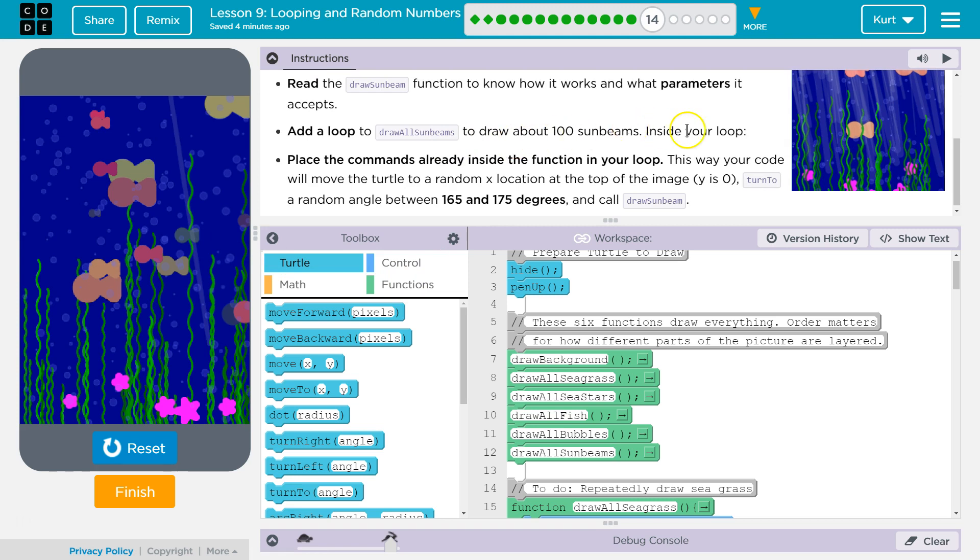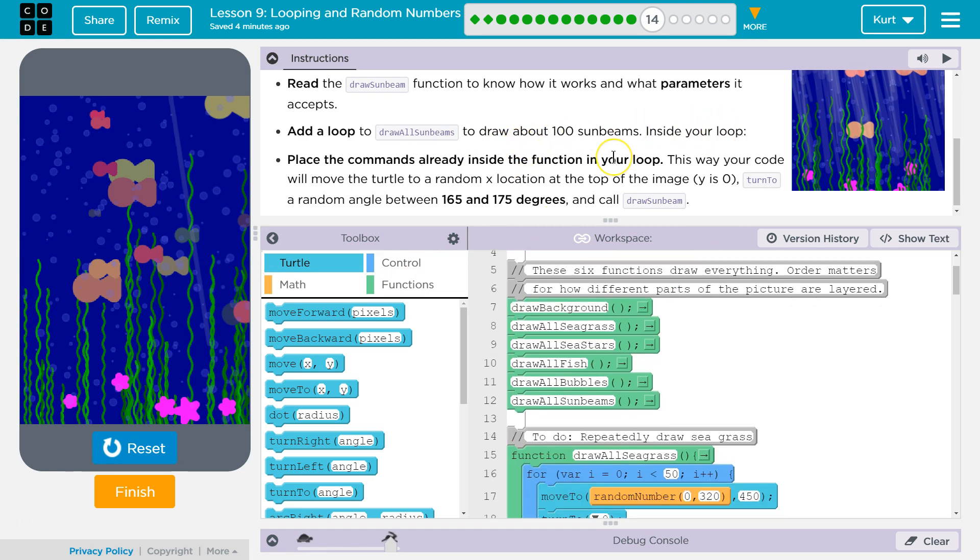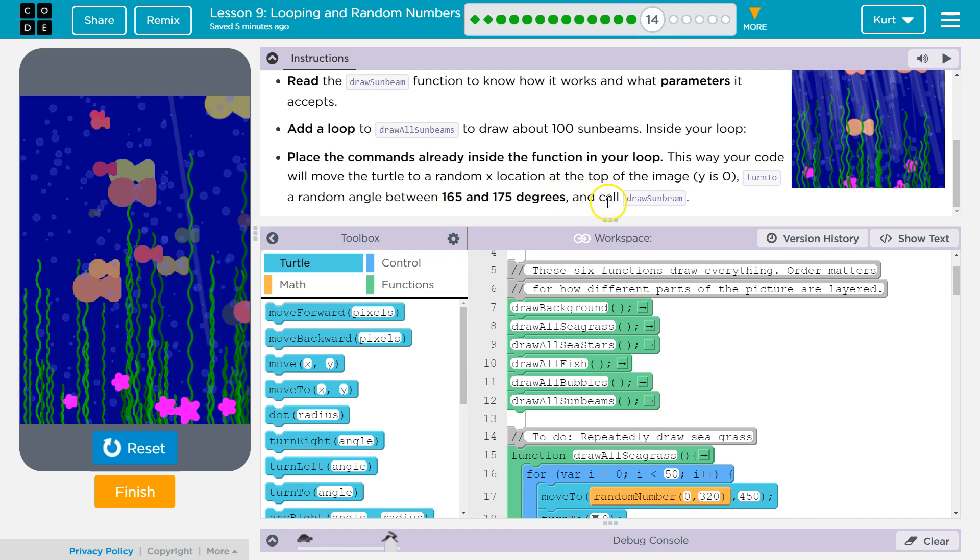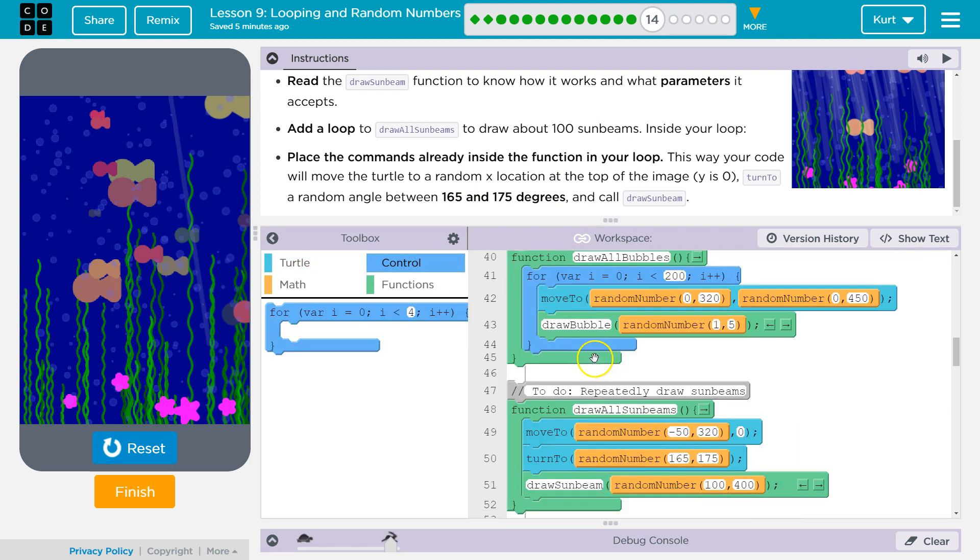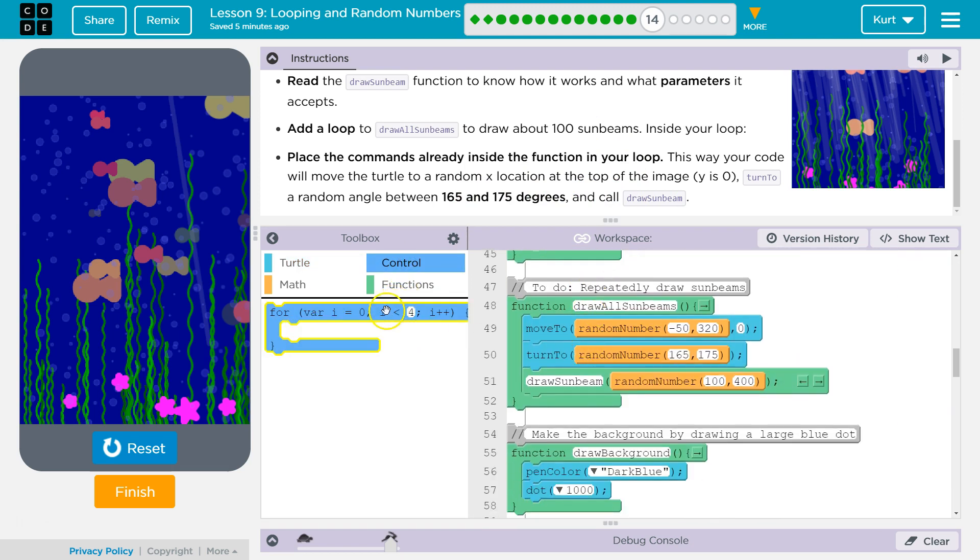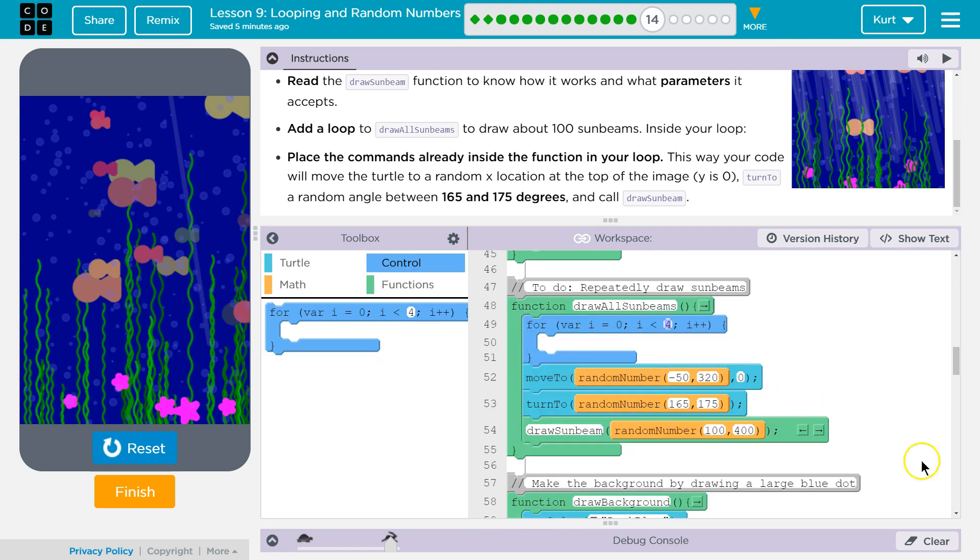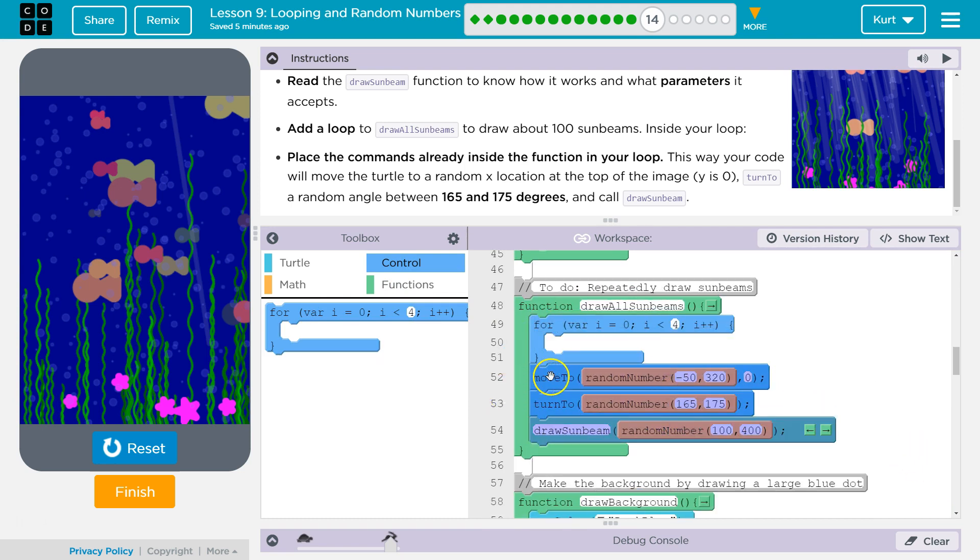Alright. Add a loop to the sunbeam to draw 100 sunbeams. Inside your loop, place the commands already inside the function in your loop. This way your code will move the turtle to a random x location at the top of the image. Y is 0. Turn to a random angle between 165 and 175 and call draw sunbeam. So we need 100 times. So let's go to control. And grab this. I need to put this code inside of it.